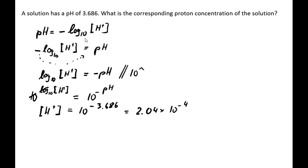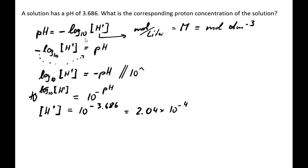Now we need to think about the unit. The definition of pH requires the concentration to be given in units of mole per liter, sometimes abbreviated as capital M (molar), which is also the same as mole per decimeter cubed (mol dm⁻³). So the unit for our proton concentration is mol dm⁻³.